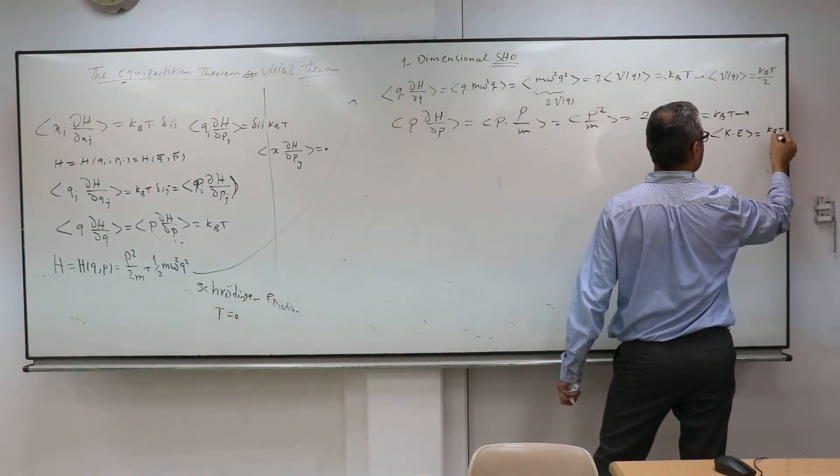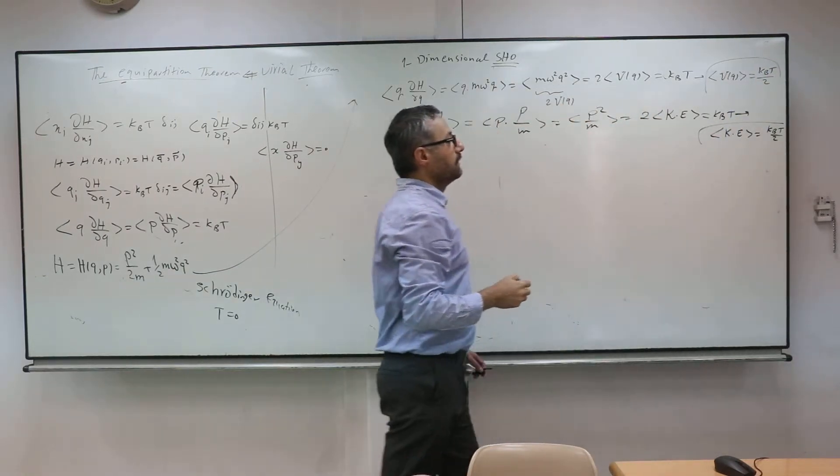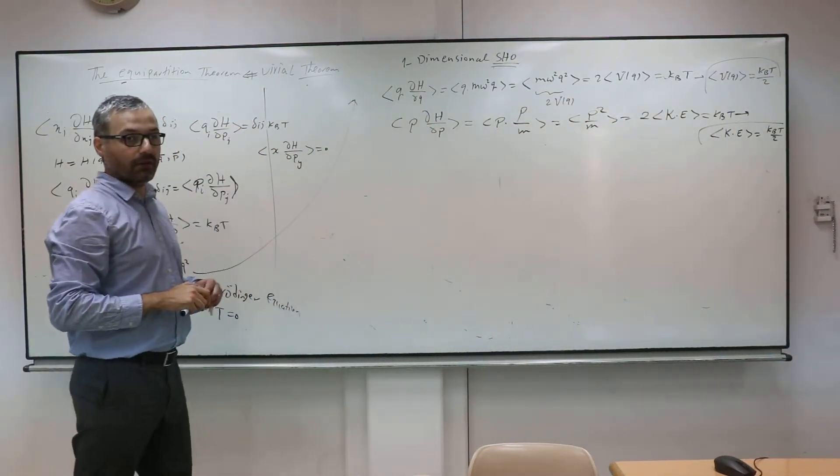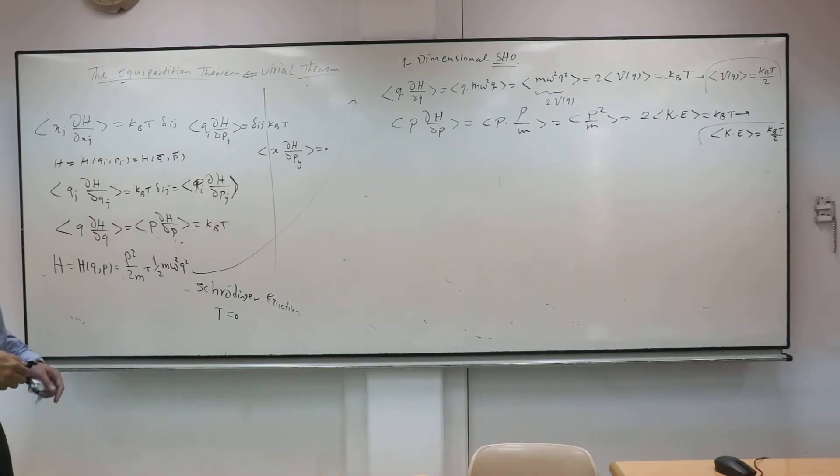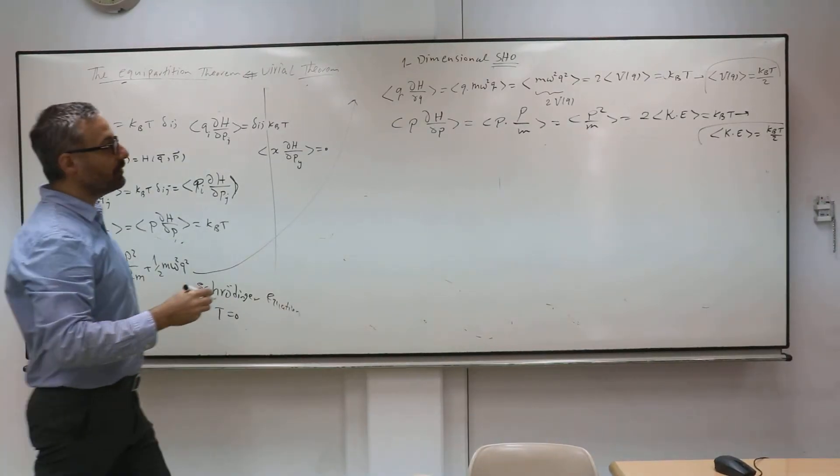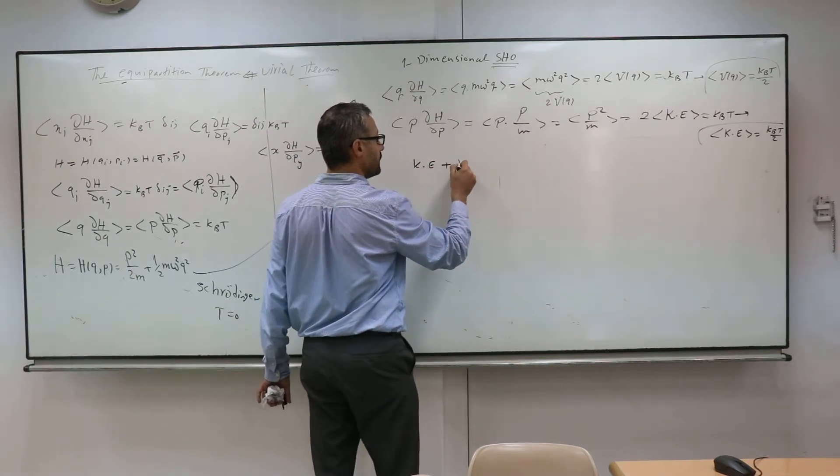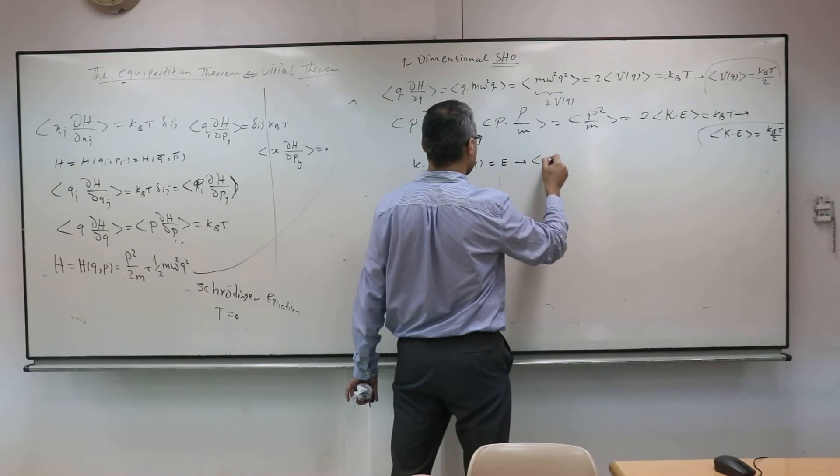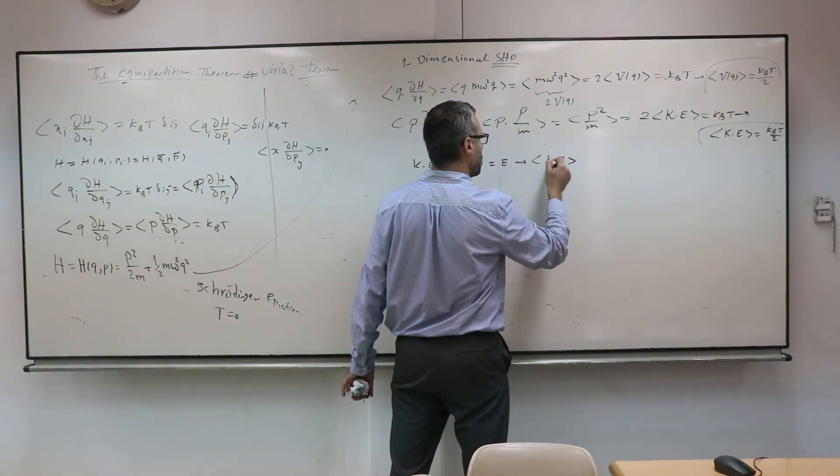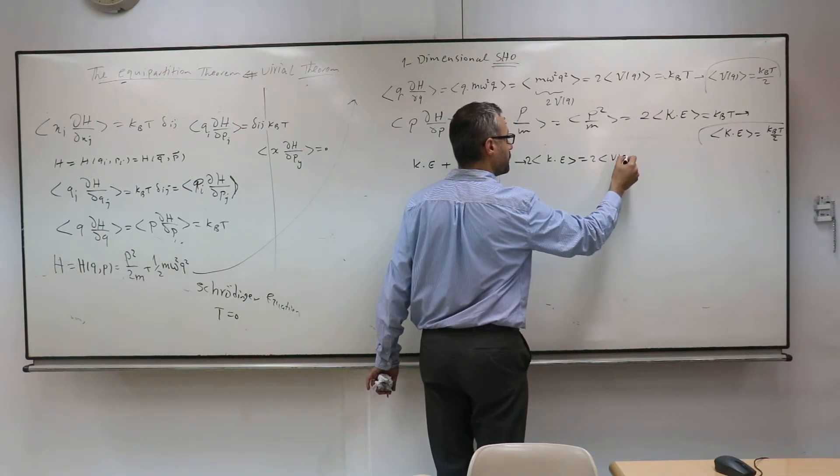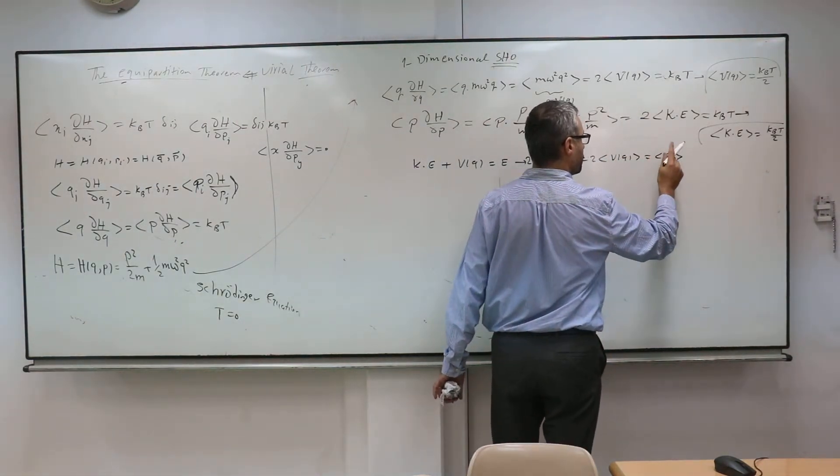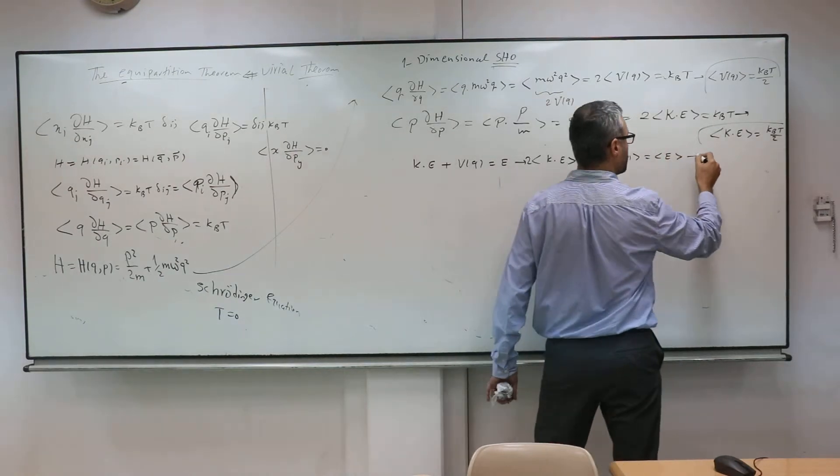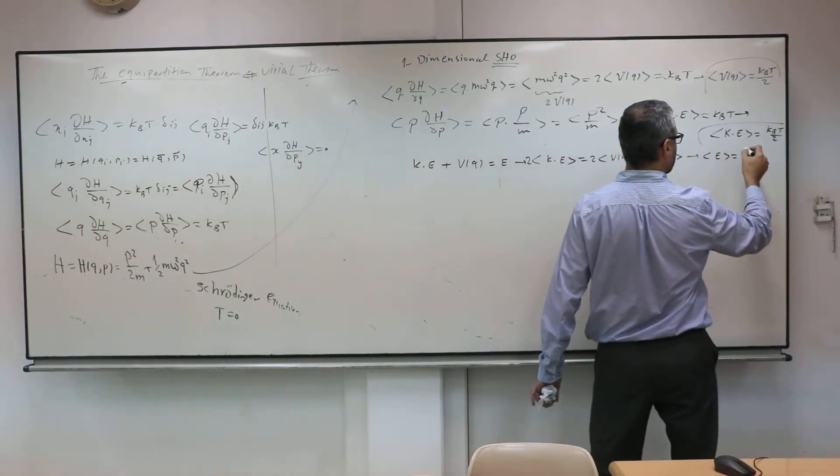And do you know what is the funny thing? For harmonic oscillator at any temperature, the average of the kinetic energy and the average of the potential energy are the same. And you know that kinetic energy plus potential energy is the total energy. And because they are the same, you can write double the average of this or double the average of the potential is equal to the average of the Hamiltonian or E. So average of E will be two times of that.